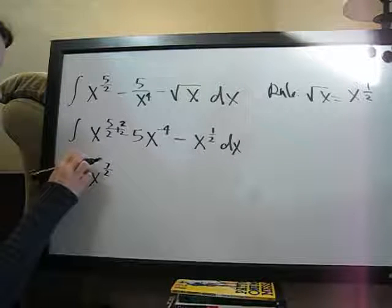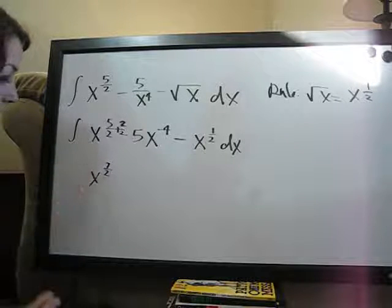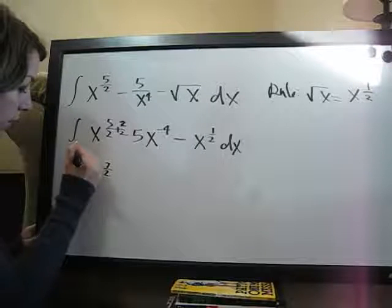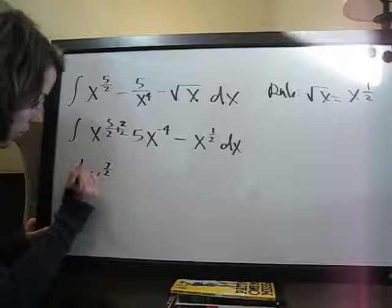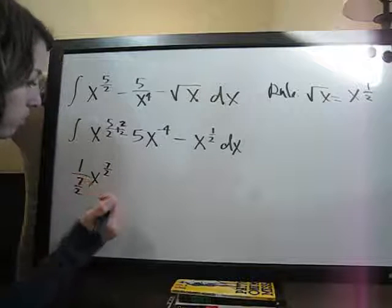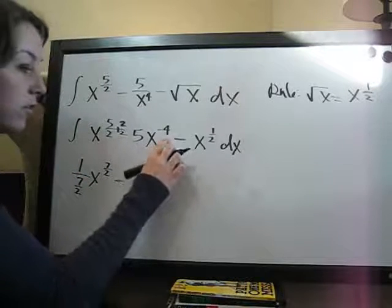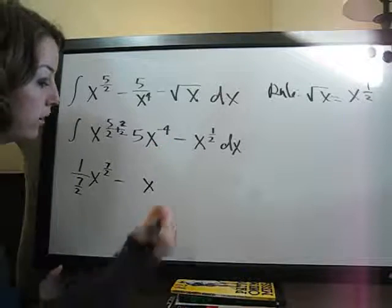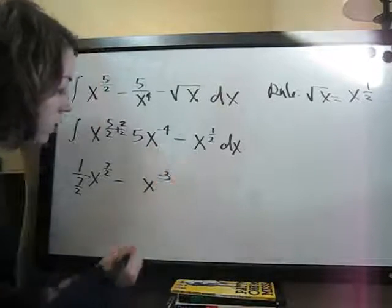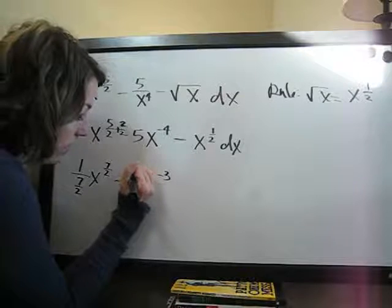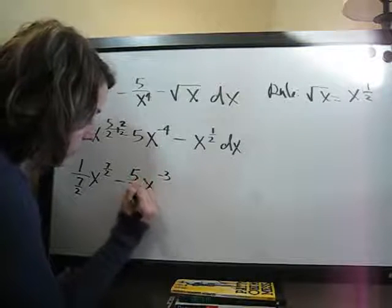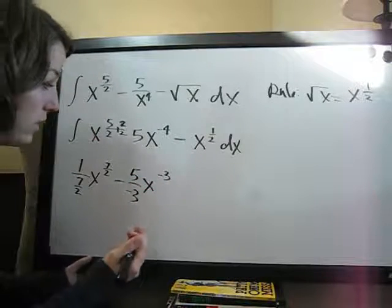And then we need to divide 1, which is the coefficient, by the new exponent, 7 halves. Then, minus x, add 1 to the exponent, negative 4 plus 1 is negative 3. And then divide the coefficient by the new exponent, 5 over negative 3.